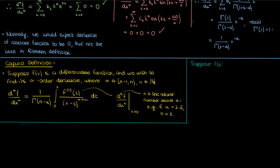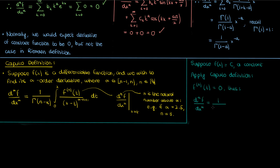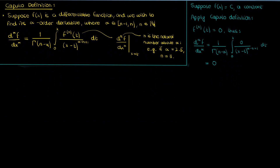Let's use the Caputo definition to find the fractional derivative of a constant. So f equals some constant c. The nth derivative of a constant is just zero, so the numerator in this integral is zero, which makes the fractional derivative of f equal to zero by the Caputo definition. We've established that the Caputo fractional derivative of a constant is zero, meaning we've dealt with the inconsistency we were getting with the Riemann definition.